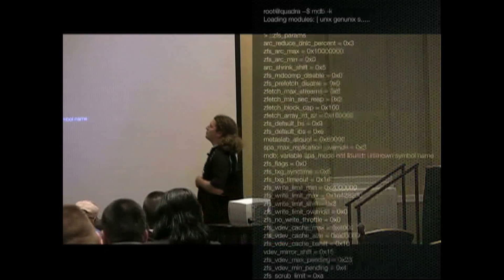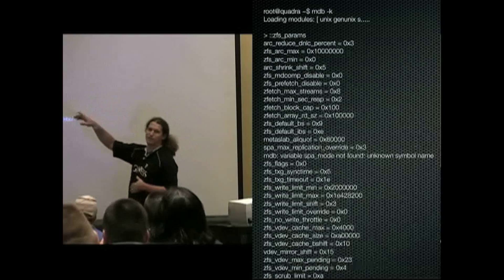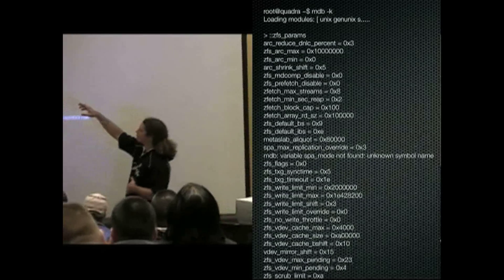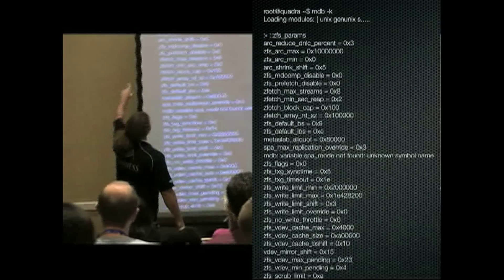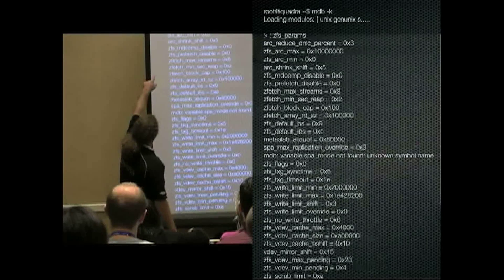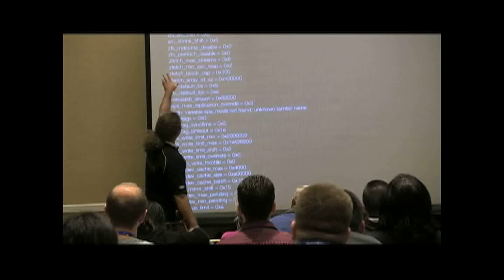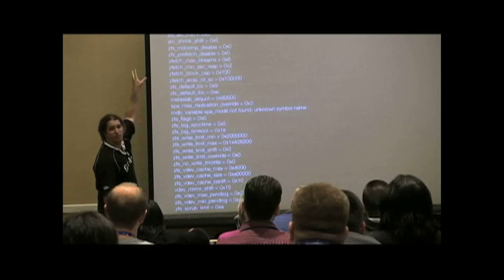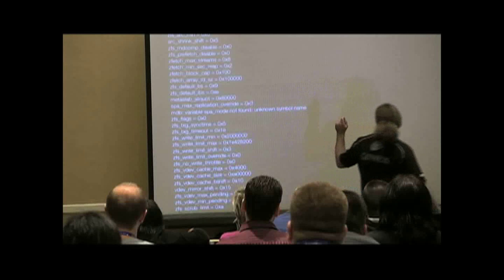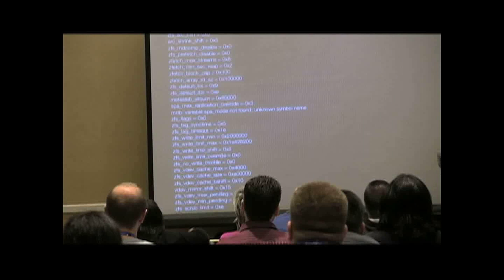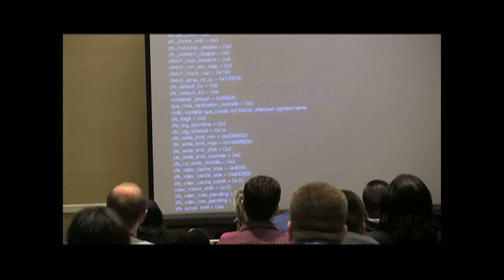Here's a look at MDB. MDB-K will let you look at the running kernel and we're in the ZFS params. And you can see some of the tunables here. Arc reduce DNLC percent, ZFS arc max, min, shrink to shift. By the way, any tunable with shift in it don't really touch. That's a bit mask and you probably don't want to mess with it. But there's a lot of really great tunables that we can play with.